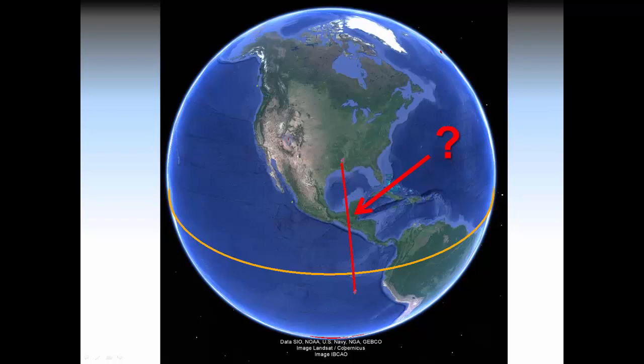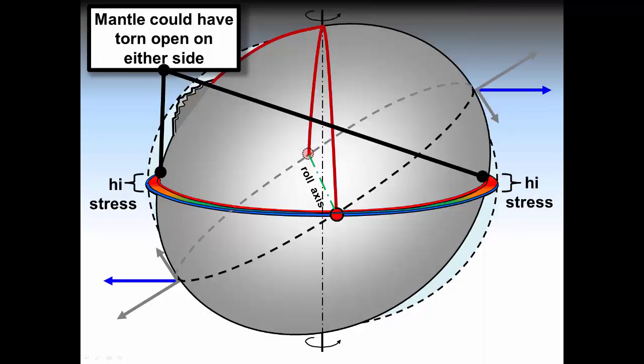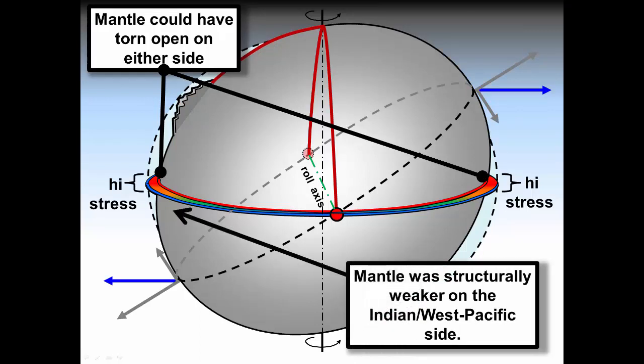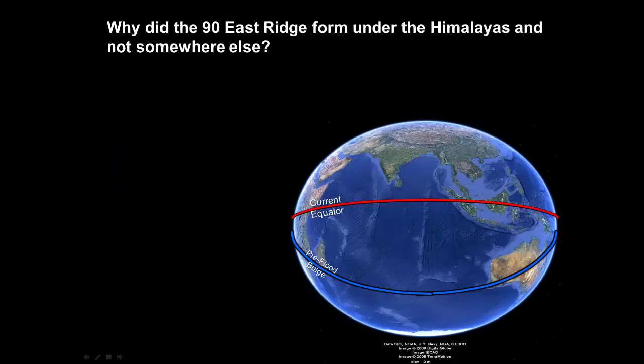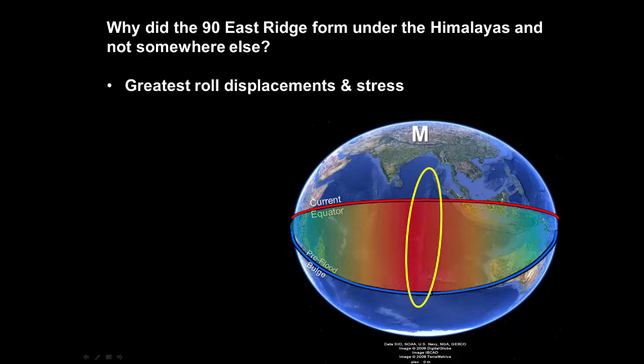As explained in the Hydroplate Theory Overview series, the mantle in the Western Hemisphere was not as heavily fractured as in the Indian Ocean and Western Pacific. The subsidence of the Western Pacific and Indian Oceans greatly fractured the mantle, so these areas were structurally much weaker than their antipodes in the Western Hemisphere. It is for these reasons that the Hydroplate Theory expects this uniquely straight formation should be located as it is directly under the Himalayas.